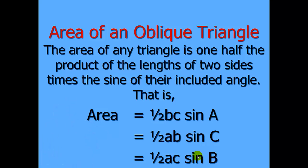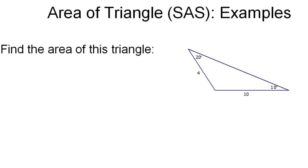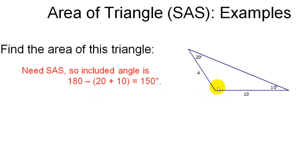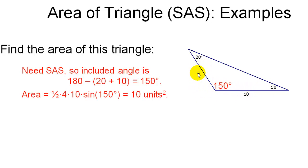Let's look at some examples. To use this area formula, you have to know one of the angles and its two included sides. In this triangle, we don't have all that information — we have two angles, but neither angle has both its included sides. Using geometry, since the sum of interior angles is 180 degrees, the third angle is 150 degrees. Now we have an angle and its two included sides. So the area is one-half times four times ten times sine of 150 degrees, which equals ten units squared.